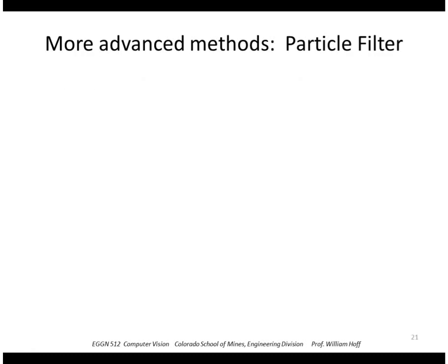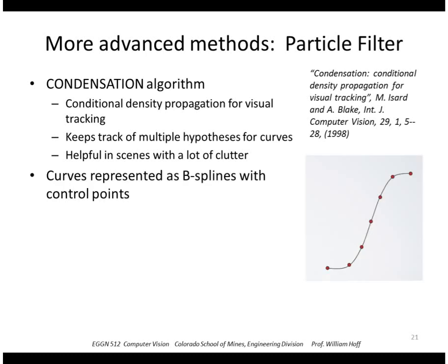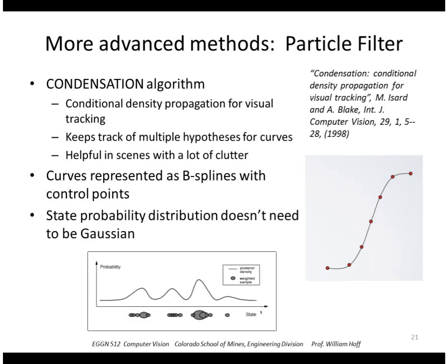A more advanced method is the condensation algorithm, or particle filter, which is very good for tracking curves in high-clutter images. It does this by keeping track of multiple hypotheses for the curves, because you're not sure if the curve belongs to the object you're trying to track or to clutter. We represent curves as a set of control points with a spline fitting, and unlike a Kalman filter, the probability distribution of the result is not a single Gaussian — it can be arbitrarily complex. The particles and their weights determine the peaks in these distributions.